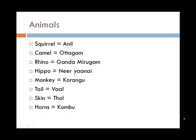Squirrel is anil. Camel is ottagam. Rhino is ganda mirigam. Hippo is neer yaanai. Neer generally refers to water and yaanai is elephant, so the elephant that stays in water is a hippo — neer yaanai. Monkey is koranga.